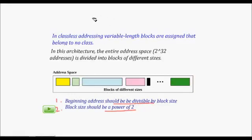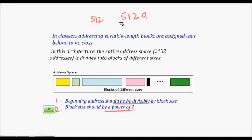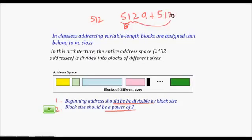To understand why the starting address must be divisible by the block size: suppose our network size is 512, which is a power of two. The starting address should be a multiple of 512. Then the ending address will be the starting address plus 512, and since 512 is divisible by 512, the end address is also divisible by the block size. This ensures a new block of the same size can start right after.